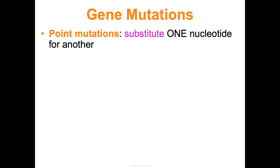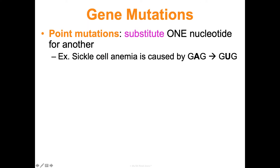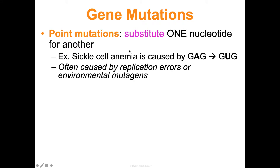Within gene mutations, one important type is a point mutation — a substitution of one nucleotide for another. Sickle cell anemia is caused by a U replacing an A (a uracil replacing an adenine). This is often a replication error or caused by an environmental mutagen. Sometimes this change doesn't affect the protein made at all, because some amino acids are coded for by four different codons — there's built-in redundancy — but it still can happen.